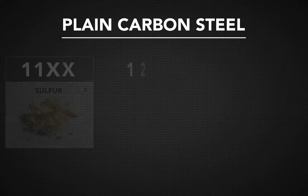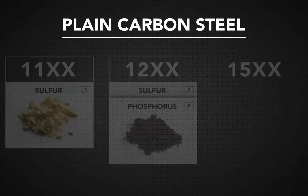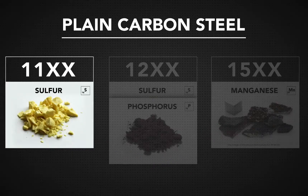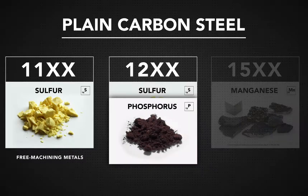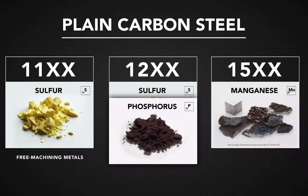There are three types of carbon steels. The 11XX steels are free machining metals that contain extra sulfur. 12XX steels contain extra sulfur and phosphorus. The 15XX steels have manganese from 1.00 to 1.65%.